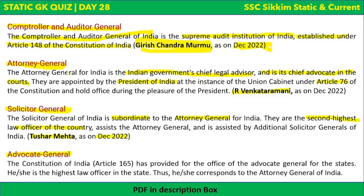There is a difference between advocate general and attorney general. The highest law officer of the state is known as advocate general, whereas the highest law officer of the country is attorney general. Article 165 of the Constitution gives this provision. There are various advocate generals for different states, so there is no single name. Advocate general corresponds to the attorney general of India.